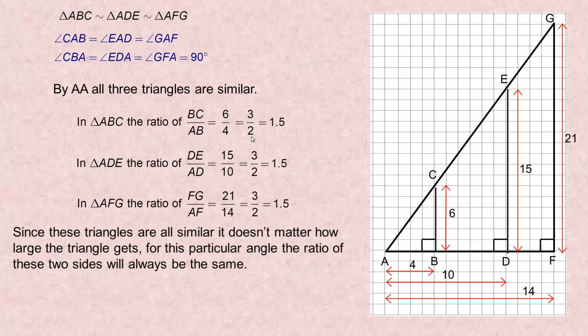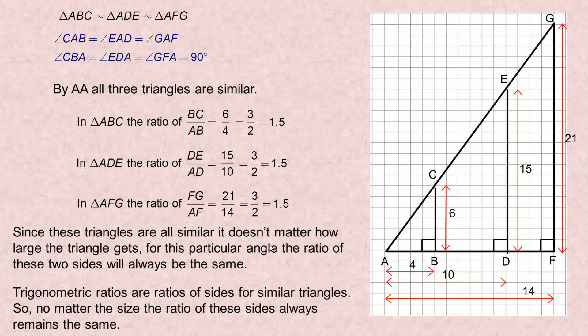Since these triangles are similar, for however big this angle is, it doesn't matter how large you scale up the triangle or how small — the ratio of those two sides is always going to be the same. To summarize: trigonometric ratios — sine, cosine, and tangent — are ratios of sides for similar triangles. When we are talking about a particular angle, no matter how large or small the triangle is, the ratio of those two sides will always be the same. That is how and why trigonometry actually works. When we get into sines, cosines, and tangents, they are actually just ratios of a pair of sides in triangles. And that is the end of the tutorial.